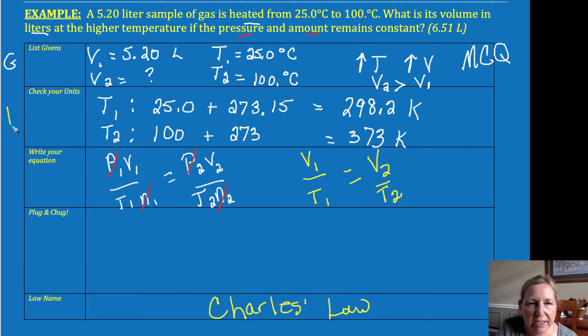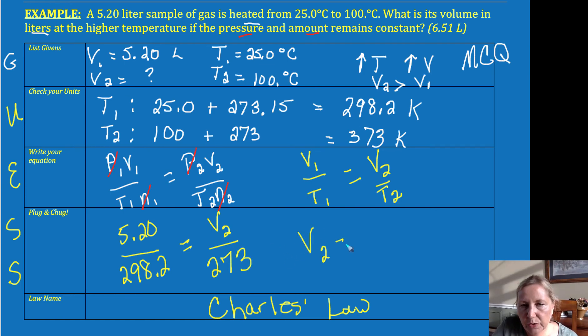Okay, and now we can remember we've got givens, unknowns, equations, substitute, solve. And so I'm going to have 5.20 over 298.2 is equal to V2 over 273. And V2, assuming my math was right, is 6.50 liters.